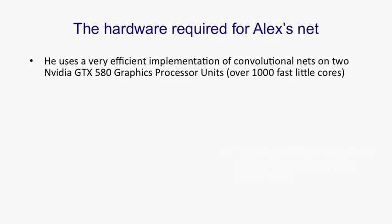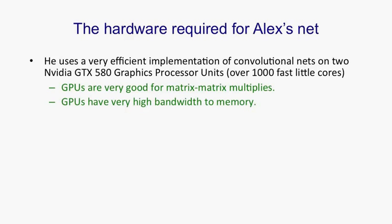Alex couldn't have done this work without significant hardware, but the hardware only costs a few thousand dollars now. He used a very efficient implementation of convolutional neural nets on two NVIDIA GTX 580 graphics processors. Each has over 500 fast cores which are very good at arithmetic. GPUs are very good at matrix-matrix multiplies: you stack the vector of activities of a hidden layer over many training cases to get a matrix, multiply it by a weight matrix to get activities in the next layer, and if both matrices are large the GPUs give about a factor of 30 speedup. They also have very high bandwidth to memory, which is needed because neural nets constantly require new weights to multiply by activities.